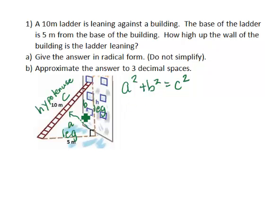We can let the leg here be our side A, so we would have 5 squared. Side B is actually H, our variable, squared. And side C, of course, is the hypotenuse, which is 10 squared. 5 squared is 25, the height squared stays H squared, and 10 squared is 100.